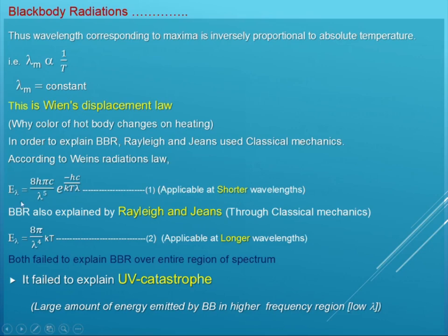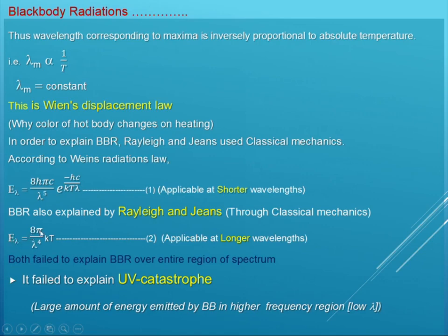This equation — E_lambda equal to 8πhc/λ⁵ into exp(-hc/λkT) — is equation number 1, applicable to the shorter wavelength only, where h is Planck's constant, c is velocity of light, lambda is wavelength, k is Boltzmann constant, and T is absolute temperature. Rayleigh and Jeans proposed another mathematical equation, also based on classical mechanics: E_lambda equal to 8πkT divided by lambda to the power 4.